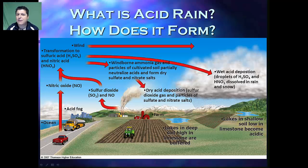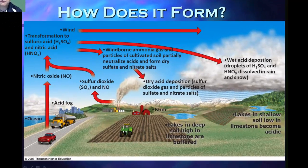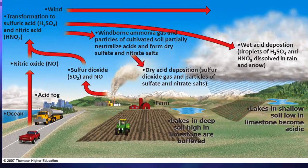Acid rain is kind of a misnomer because acid deposition can take both wet and dry forms. Any kind of precipitation that has a pH lower than 5.6 is considered to be acidic.